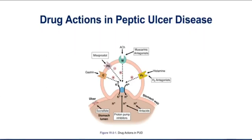This figure does a very nice job of summarizing drugs used in peptic ulcer disease. Let's start by reviewing the normal parts of this diagram. Right in the middle, you see the proton pump, which is a hydrogen-potassium ATPase. The pump is going to pump hydrogens into the lumen of the stomach and potassium into these parietal cells.